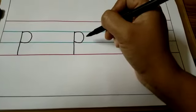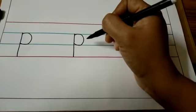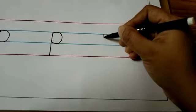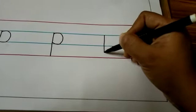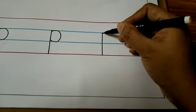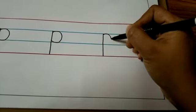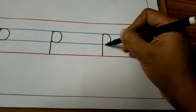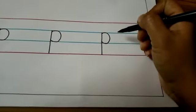This is letter p. Once again, a standing line from the first blue line to the second red line, and a right curve from the first blue line to the second blue line. Like this.